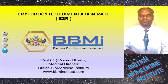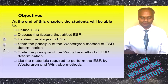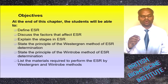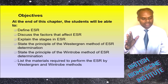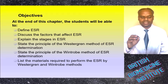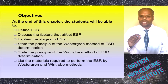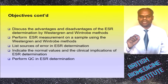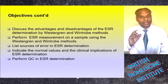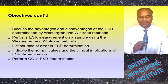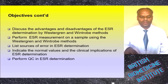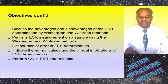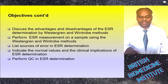The objectives are: at the end of this chapter the student will be able to define ESR, discuss the factors which affect ESR, explain the stages of ESR, state the principles of the Westergren and Wintrobe methods of ESR determination, list the materials required, discuss their advantages and disadvantages, perform ESR measurements, list sources of error, indicate normal values and clinical implications, and perform quality control in ESR determination.